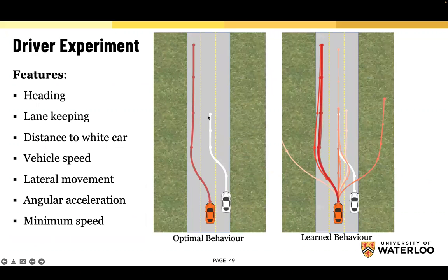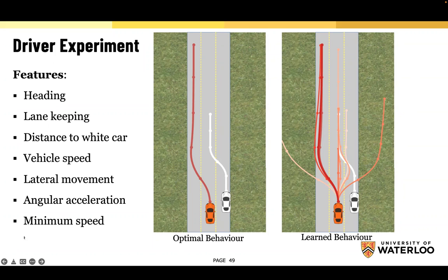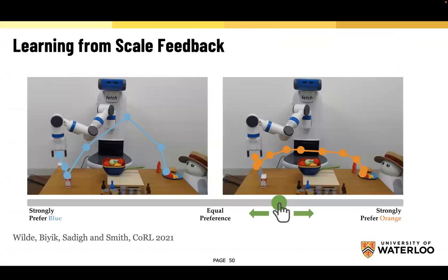In the driver experiment, a white car performs a lane change and we learn how the orange (controlled) vehicle should respond. We use features including heading, lane keeping, distance to the white vehicle, vehicle speed, lateral motion, angular acceleration, and minimum speed (braking). Through around 10 interactions — including some absurd query paths like driving into the grass — we can learn a good response tailored to the particular user.